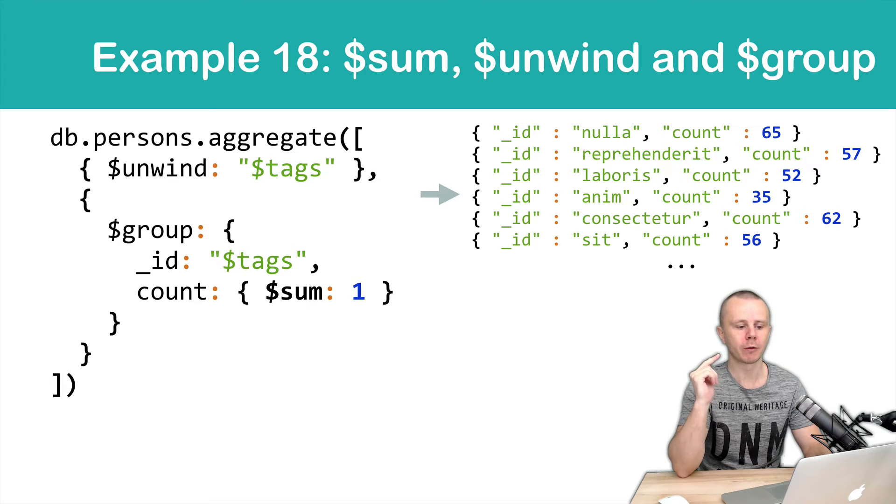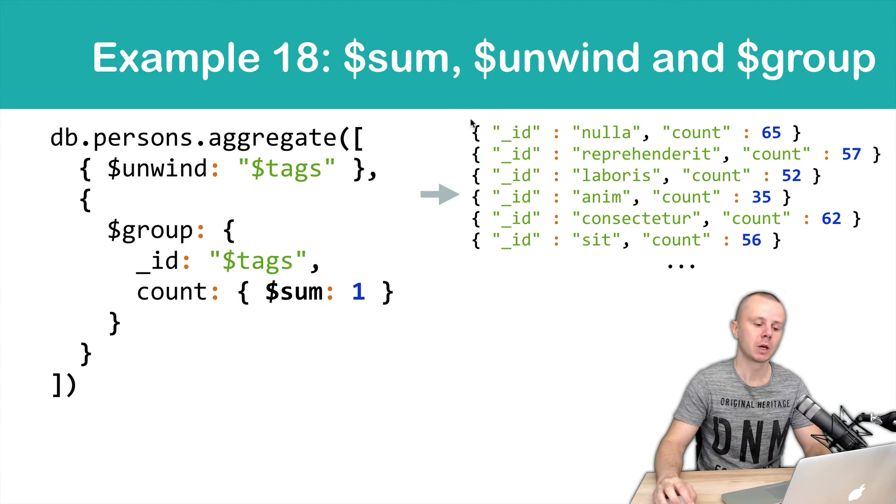So the results will be documents with two fields: underscore ID and count. Underscore ID will contain each unique tag, and count will show us the total quantity of occurrences of this tag.